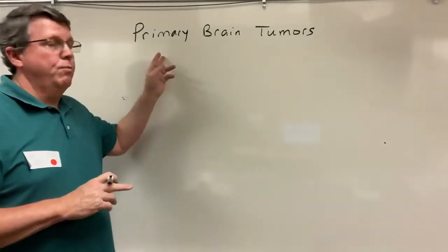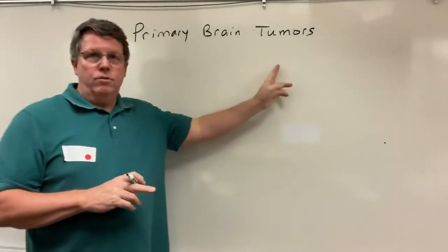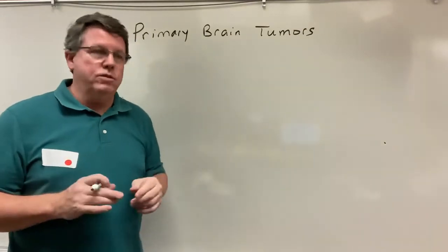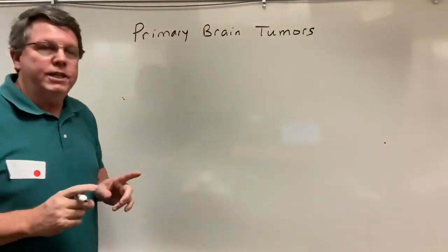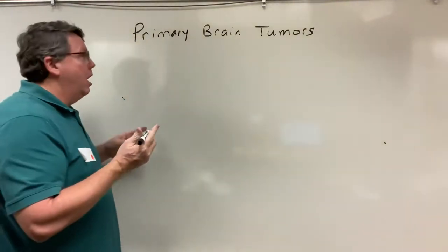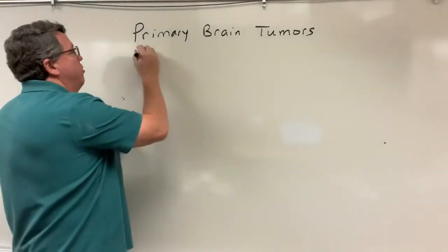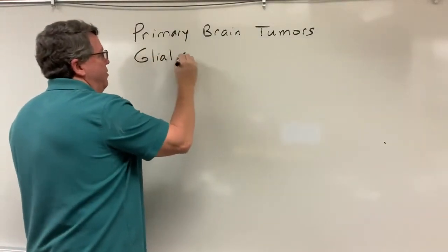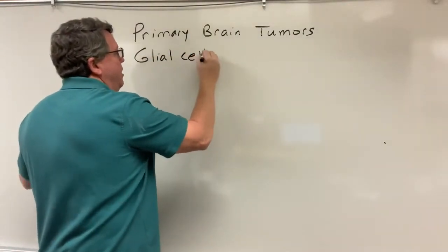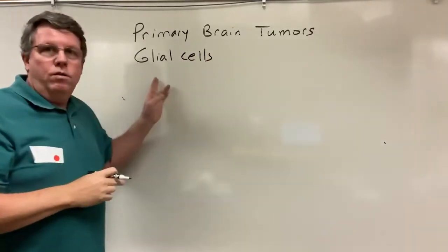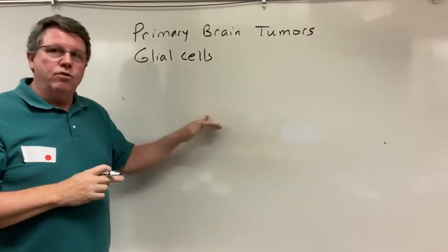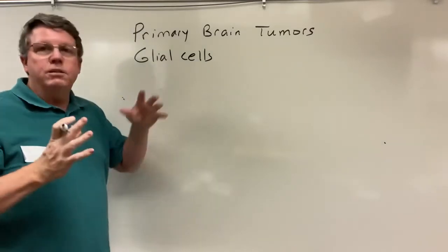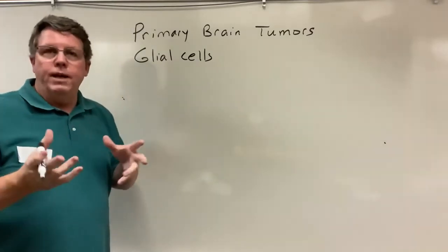Today we're going to be talking about primary brain tumors, and particularly about astrocytomas. Primary brain tumors happen in something called glial cells. Glial stands for glue, because these cells are responsible for support in the brain.